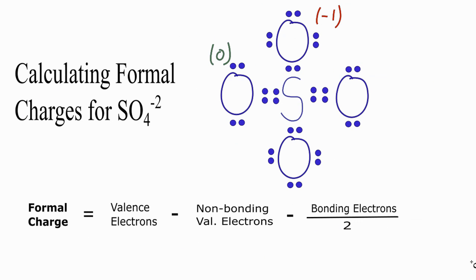At this point, we could repeat the process for this oxygen right here, but it's the same as this one here. So it's going to have the same formal charge. So we can just put a 0 here, and then on the bottom, again, symmetrical. This is the same as this oxygen up here, and the formal charge for that will be negative 1 as well.